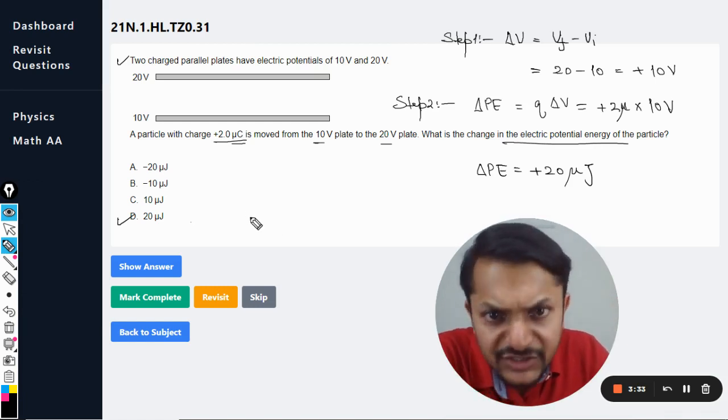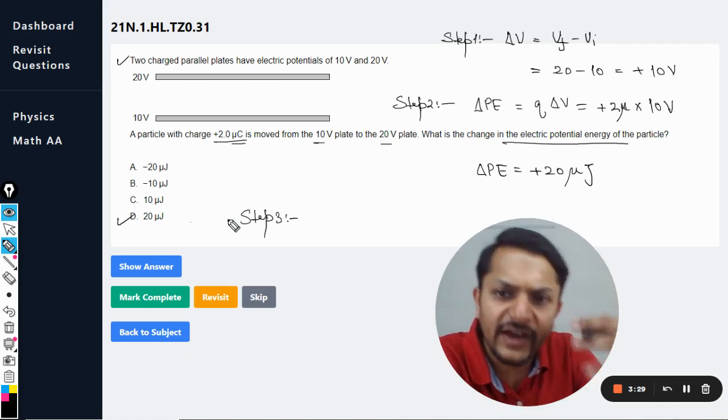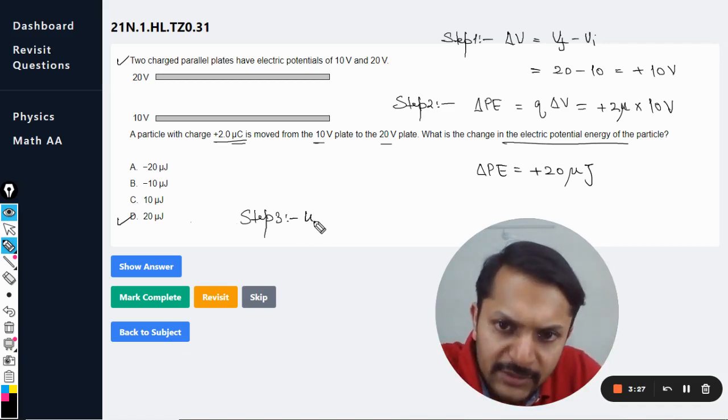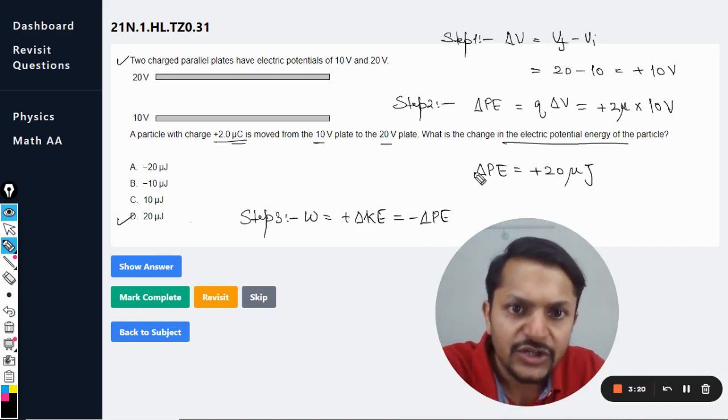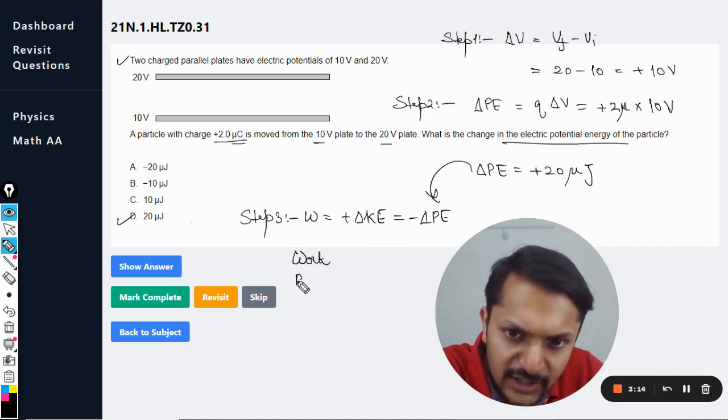And it's not asked here, but if we go for step number three, that is finding the work done, so let me tell you work done is equal to the positive change in kinetic energy or the negative change in potential energy. So we just substitute this value here